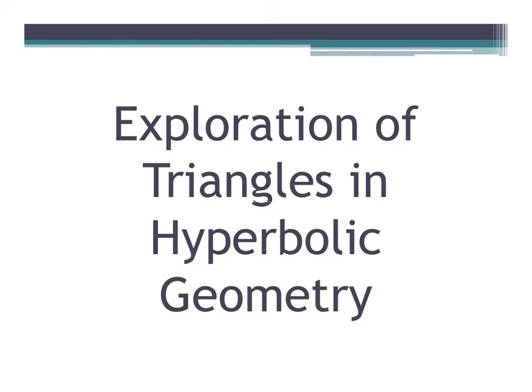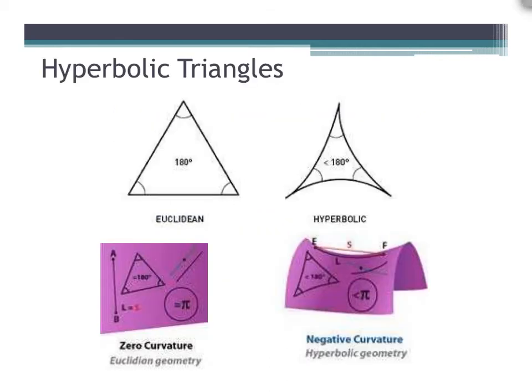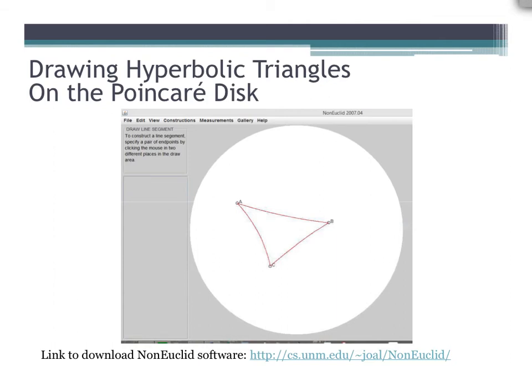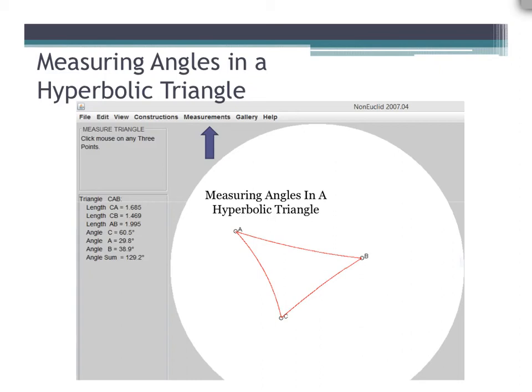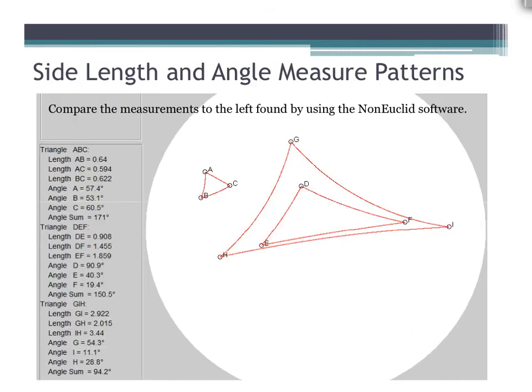Now let's explore triangles in hyperbolic geometry. Hyperbolic triangles consist of three non-collinear points connected by three line segments, much like triangles in the Euclidean plane. However, the sum of the angles of a hyperbolic triangle is always less than 180 degrees — this difference is due to the curvature of the plane. Using Non-Euclid software, we can create various hyperbolic triangles to investigate the angle sum. After creating these triangles on the Poincaré disk, as the side lengths become longer, the angle measurements grow smaller.